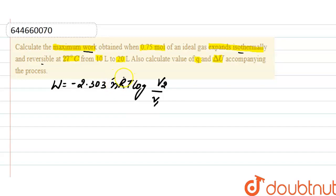n is the number of moles, R is the gas constant, and T is the temperature. Here, putting the values: